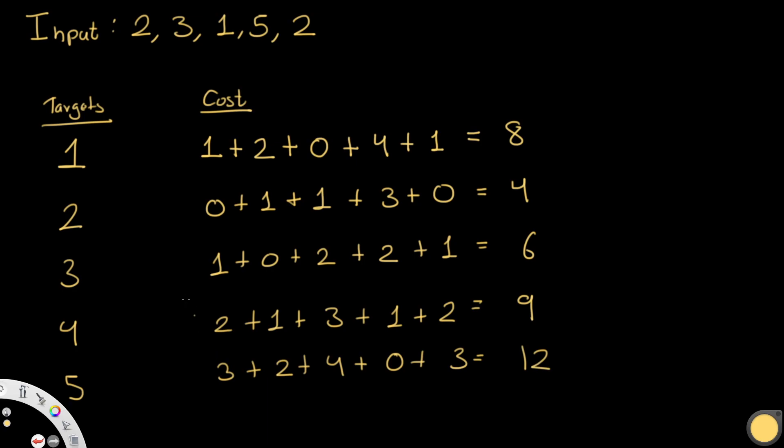This is kind of a brute force way we can do it. We can keep looking at several targets until we find a final answer. I'm just going to write down some other targets and the cost just so you can see how it looks like. I tried out some targets so we have 1, 2, 3, 4, and 5 and you can see the final cost that it takes given these targets. At 1 we have 8, at 2 we have 4, 6, 9, 12. Obviously our answer just based on this brute force approach is going to be target 2.